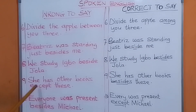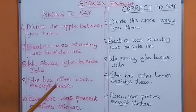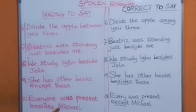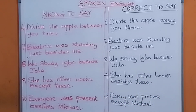Number nine: 'She has other books except these' — don't say that. If you mean 'in addition to this,' you cannot use 'except.' You have to say 'she has other books besides this,' meaning she has other books in addition to this.